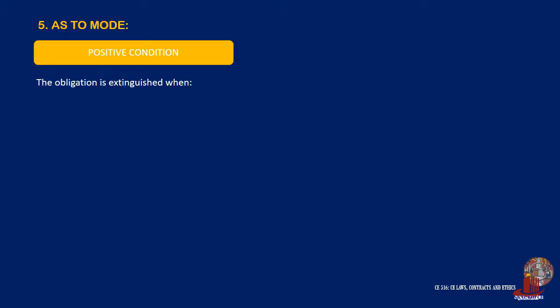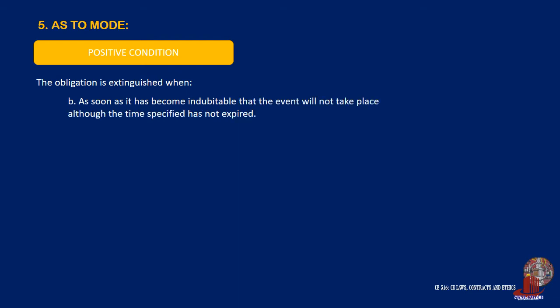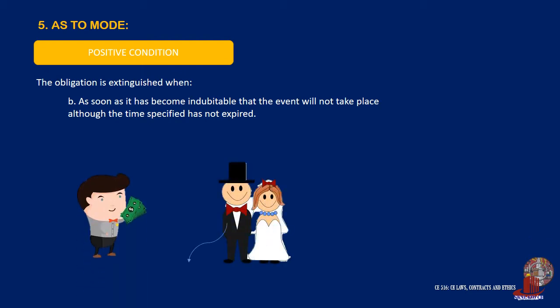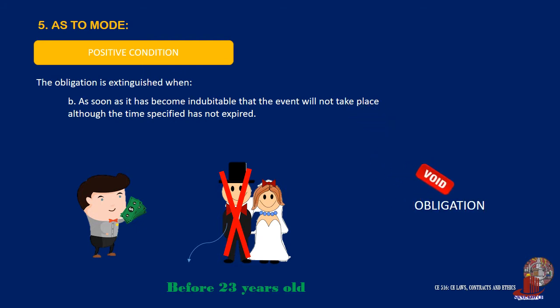The second case for the extinguishment of the obligation under positive condition is as soon as it has become indubitable that the event will not take place, although the time specified has not expired. Taking the same example, if Bert dies at the age of 22 without having been married to Charisse, the obligation is extinguished because it has become indubitable that the condition will not take place. In this case, the obligation of Rob is deemed extinguished from the death of Bert, although the time specified — before reaching the age of 23 — has not yet expired.